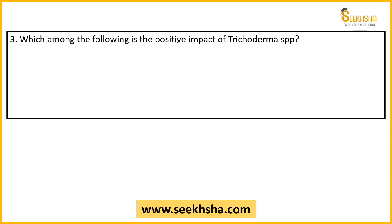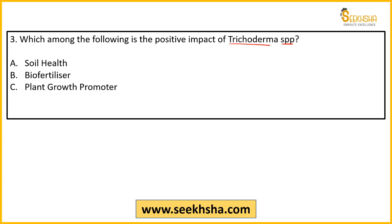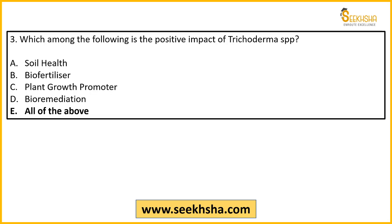Third question: 'Which among the following is a positive impact of Trichoderma SPP?' Options are: soil health improvement, bio-fertilizer, plant growth promoter, bio-remediation, and all of the above. Trichoderma is a bio-organism widely used in agriculture. The correct answer is option E — all of the above.